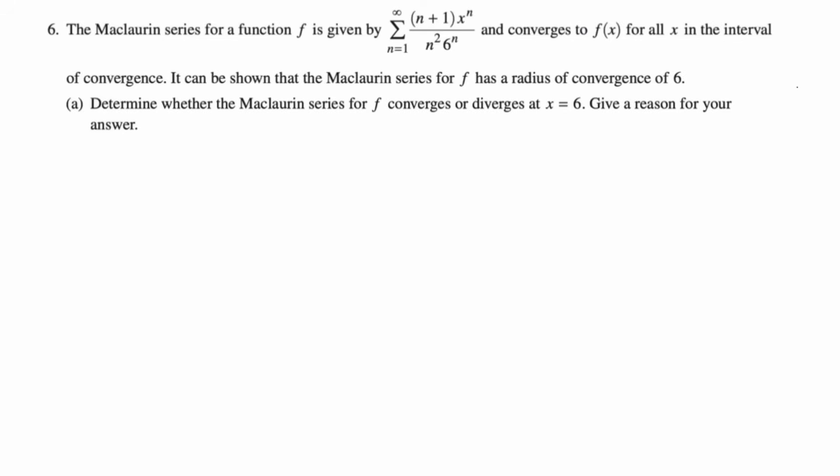Okay, in this video we're going to do number 6 from the 2024 Calc BC exam. The Maclaurin series for a function f is given by the sum from 1 to infinity, (n+1)x^n over n^2·6^n, and converges for all x in the interval of convergence.